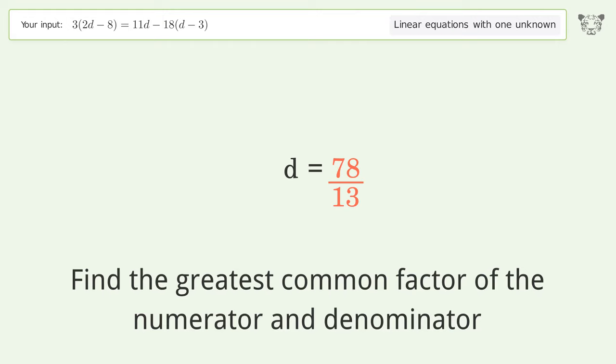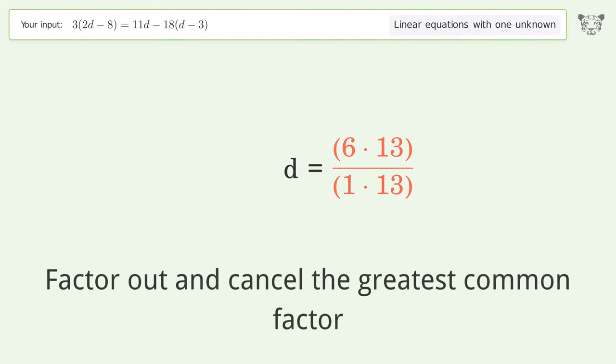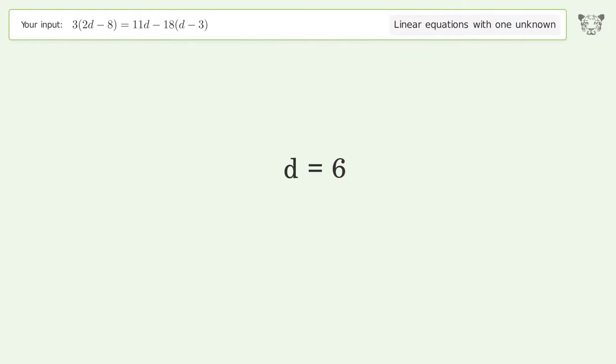Find the greatest common factor of the numerator and denominator. Factor out and cancel the greatest common factor. And so the final result is d equals 6.